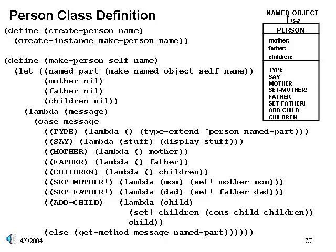In the person class, we have local variables for father, mother, and children. In this example, these are all nil by default, and only get set or changed when the various methods are invoked. For example, add-child will add a specific child to the internal list of children inside our person. In addition to mutator methods, we also have accessor methods, like mother, father, and children.